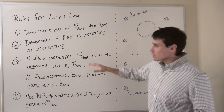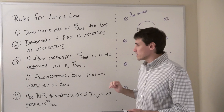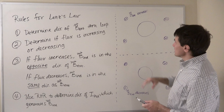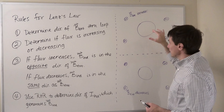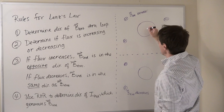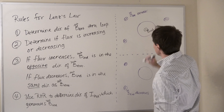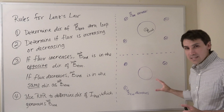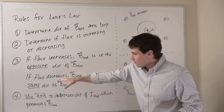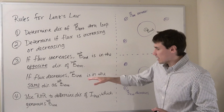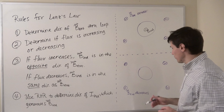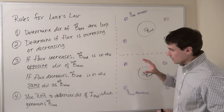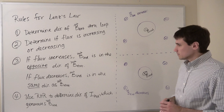Now for step three. If the flux is increasing, then the induced magnetic field will be in the opposite direction of the external magnetic field. In our top case, flux is increasing and external B points into the board, so the induced magnetic field will be out of the board — it is opposing the increase in flux. For the bottom example, the magnetic field is decreasing. If the flux is decreasing, then the induced magnetic field will be in the same direction as the external magnetic field, so here it points into the board.